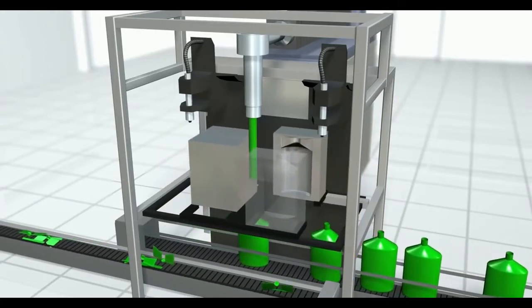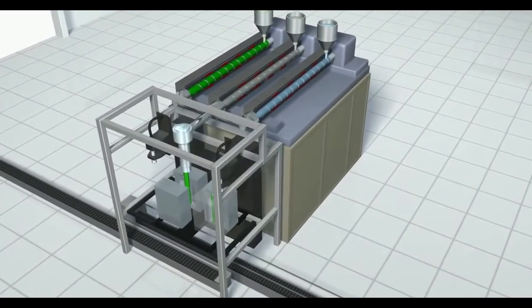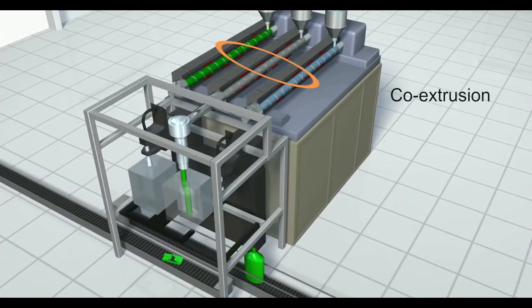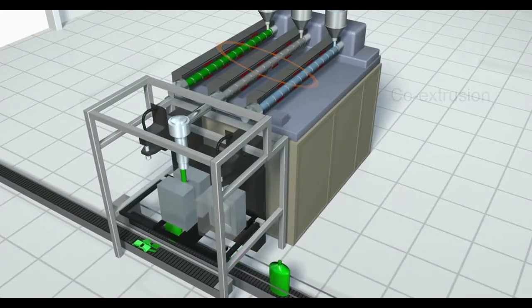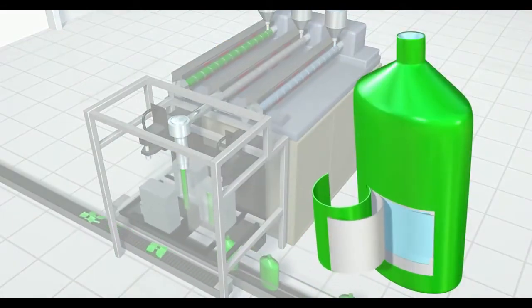The same blow molding process can also utilize multiple extruders for what is called co-extrusion. Co-extrusion is used to create bottles made up of multiple layers, and each layer possesses special characteristics like suitability for food contact.